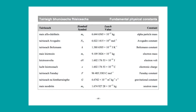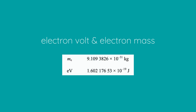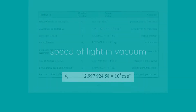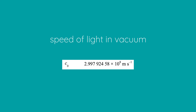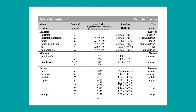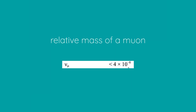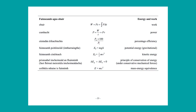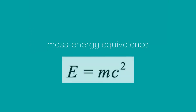Before moving on to part five, I'd like to draw your attention to a few pages in the formula tables book. Page 46 for the definition and numerical value of the electron volt and the electron mass; page 47 for the value of the speed of light in a vacuum; page 48 for the relative mass of a muon; and page 55 for the mass-energy equivalence formula E = mc².